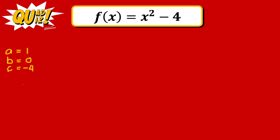With these coefficients, we can now determine the concavity and the vertex of this function. When plotted in our Cartesian plane, we can draw its parabolic graph. The graph of any quadratic function is a parabola, and aside from graphing it, there are also important details we can draw from the parabola.